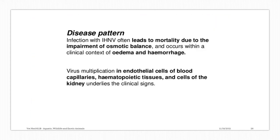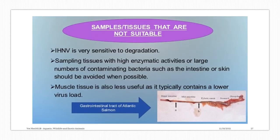For the disease pattern, infection with IHNV often leads to mortality due to impairment of osmotic balance, and occurs within a clinical context of edema and hemorrhage. Virus multiplication in endothelial cells of blood capillaries, hematopoietic tissues, and cells of the kidney underlies the clinical signs. For samples, IHNV is very sensitive to degradation. Sampling tissues with high enzymatic activities or large numbers of contaminating bacteria, such as the intestine or skin, should be avoided. Muscle tissue is also less useful as it typically contains a lower virus load.